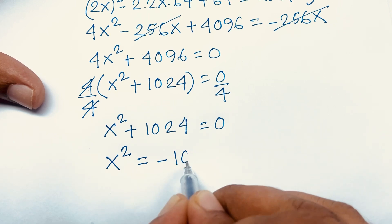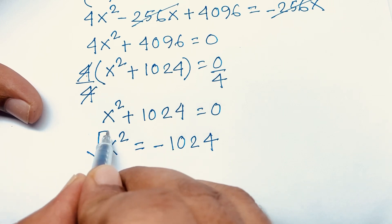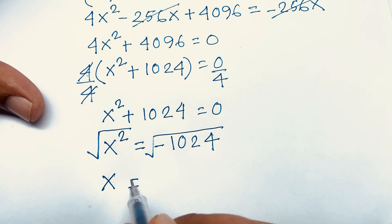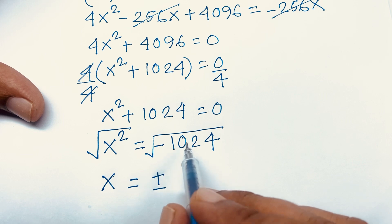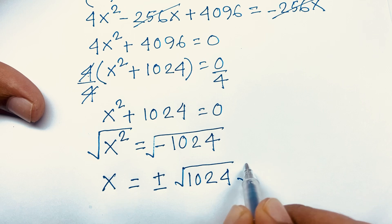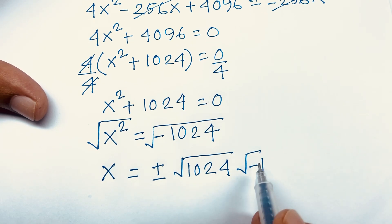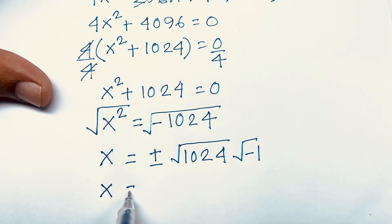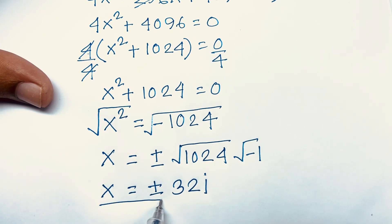Taking the square root of both sides, the square root cancels on the left. Since √(-1024) involves a negative number, we use the complex number i. So x = ±32i. This is our final answer.